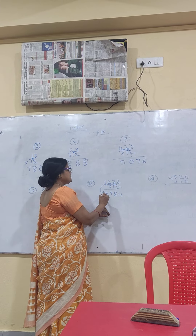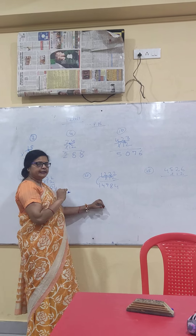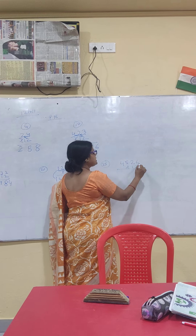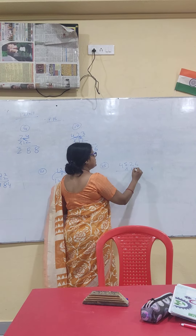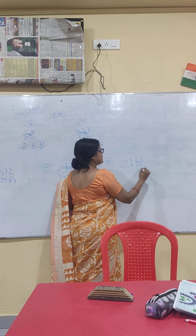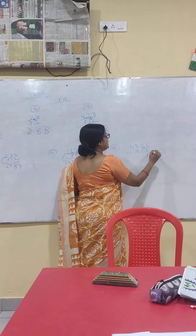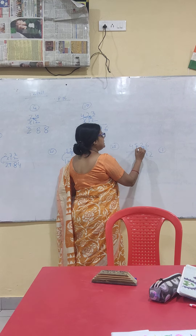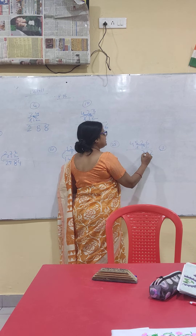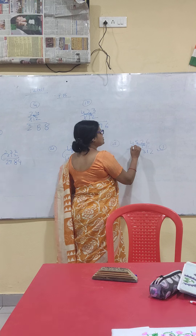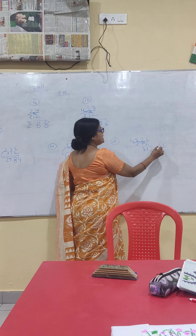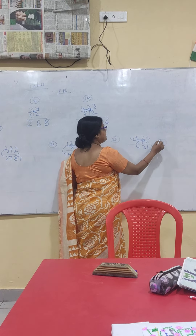Last number: 2 sixes are 12. 2 twos are 4, plus 6 is 10, plus 1 is 11. Carry 1. 2 fives are 10, plus 2 is 12, plus 1 is 13. Carry 1. 2 fours are 8, plus 5 is 13, plus 1 is 14. Carry 1.